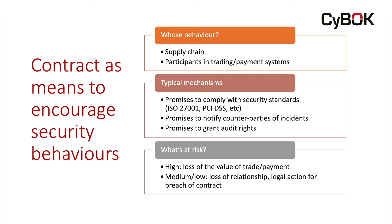When we talk about using contract to encourage security behaviors, whose behavior are we talking about? Very often it boils down to one of two types of person: either someone in a supply chain relationship, or participants in a trading or payment system. What types of contract mechanisms are used? The simple ones — promises to comply with security standards, promises to notify in the event of incidents, to grant audit rights, and similar things. What's actually at risk where these contracts are concerned? If a party is going to breach one of these promises, what do they have at risk?